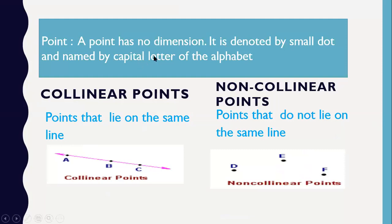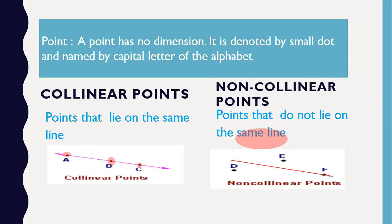Let's start with the basics. A point has no dimension. It is denoted by a small dot, and it is named by a capital letter of the alphabet, for example capital A, capital B, capital C. Now, collinear points and non-collinear points: when points A, B, and C lie on the same line, they are called collinear points. When the points do not lie on the same line — when we cannot draw a single line through all of them — they are called non-collinear points.